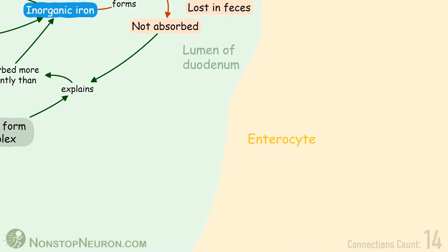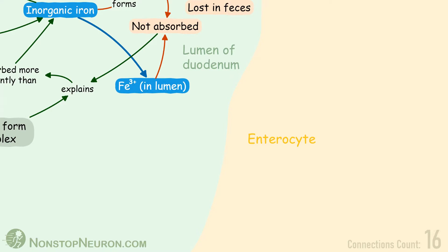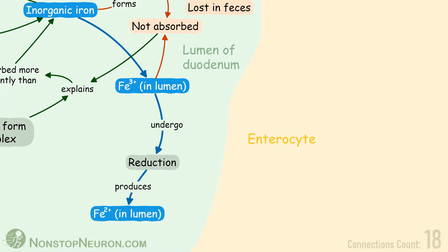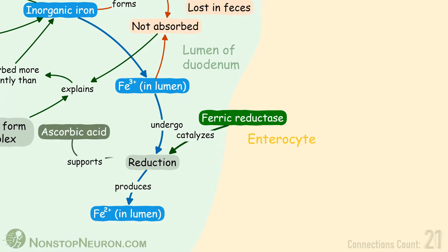Now let's see the process of absorption. Absorption of iron mostly takes place in the duodenum. Inorganic iron is usually in the form of ferric ions; however, this form is not absorbed. For absorption, it first undergoes reduction to the ferrous form. This reduction is catalyzed by ferric reductase present on the membrane of intestinal cells. The reduction is supported by ascorbic acid, cysteine, acidity, etc. So the presence of these things in the lumen increases absorption of iron.